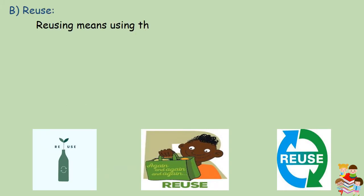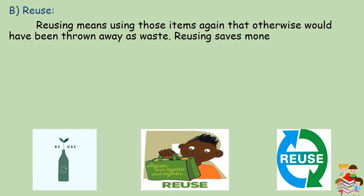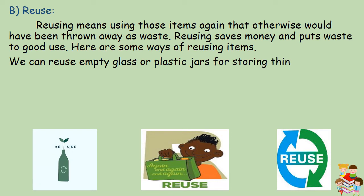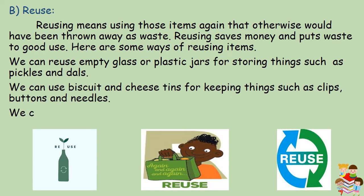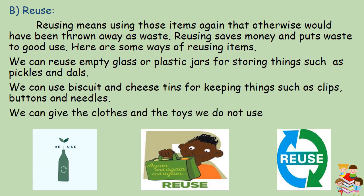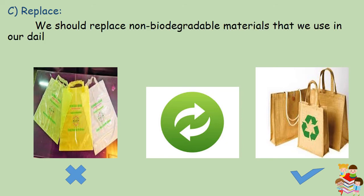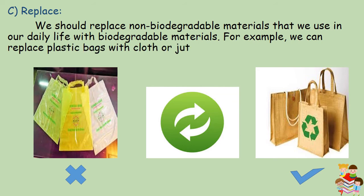B. Reuse: Reusing means using those items again that otherwise would have been thrown away as waste. Reusing saves money and puts waste to good use. We can reuse empty glass or plastic jars for storing things such as pickles and dals. We can use biscuit and cheese tins for keeping things such as clips, buttons and needles. We can give the clothes and toys we do not use to the needy. C. Replace: We should replace non-biodegradable materials with biodegradable materials — for example, replace plastic bags with cloth or jute bags.